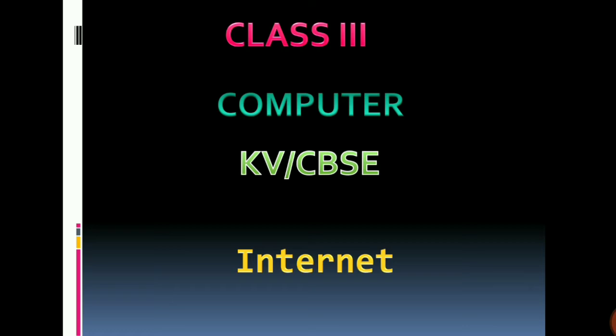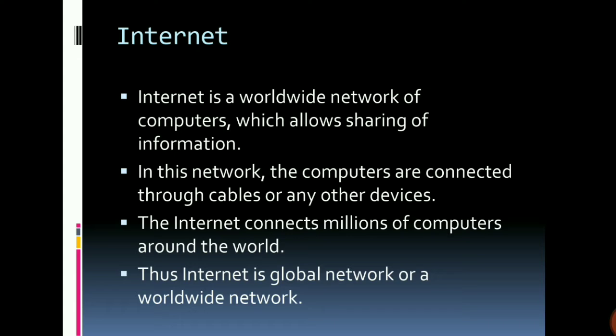Internet is a worldwide network of computers which allows sharing of information. In this network, the computers are connected through cables or any other devices. The internet connects millions of computers around the world. Thus, internet is a global network or a worldwide network.